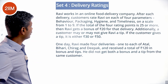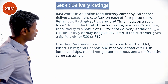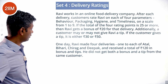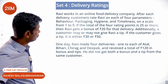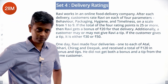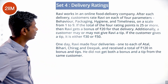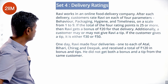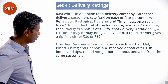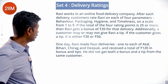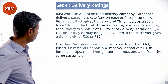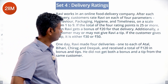Ravi works in an online food delivery company. After each delivery, customers rate Ravi on four parameters — behavior, packaging, hygiene, and timeliness — on a scale from 1 to 9. If the total of the four rating points is 25 or more, Ravi gets a bonus of 20 for that delivery. One day Ravi made four deliveries, one each to Atal, Bihari, Chirag, and Deepak, and received a total of 120 in bonus and tips.